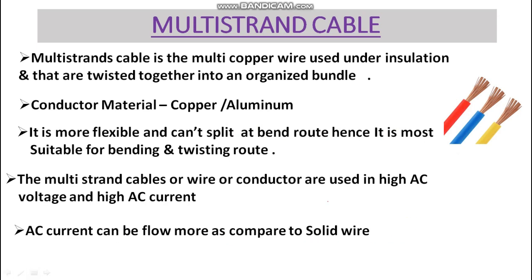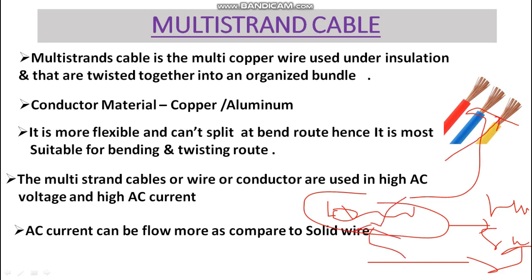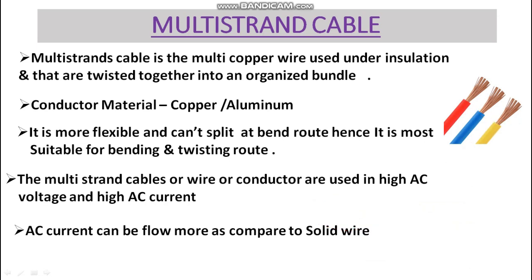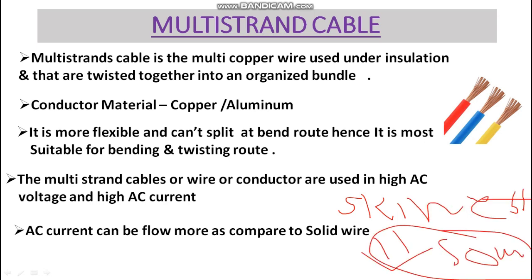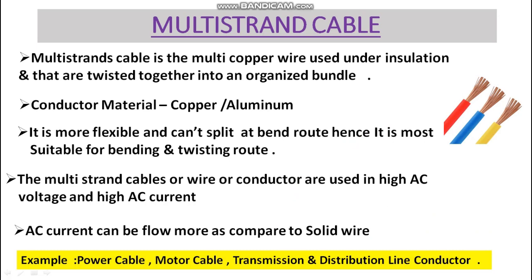AC current can flow more in multi-strand cable compared to solid wire because of its low resistance versus the high resistance in solid wire. This is due to the skin effect in solid wire — current flows toward the surface of the wire, increasing effective resistance. In multi-strand cable, this skin effect is reduced, so resistance is lower.